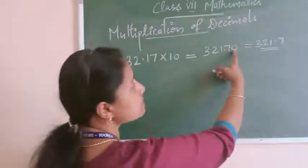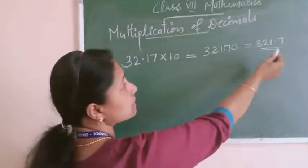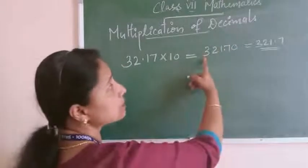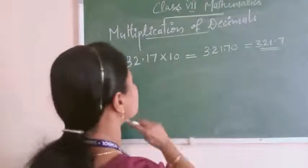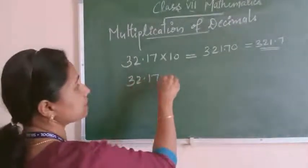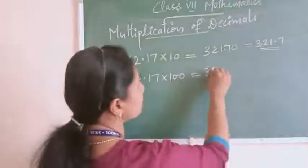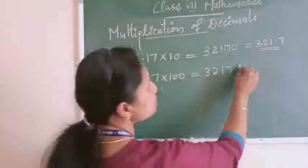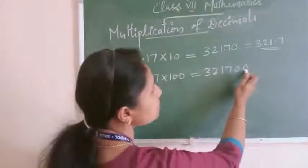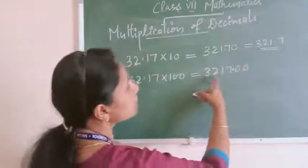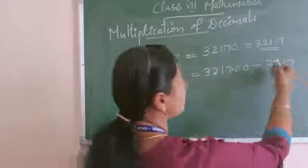Now see multiplication by 100: 32.17 multiplied by 100. Without considering the point, write the number 3217, then put two zeros for the 100. In the question, two digits are given after the point, so in the answer count two digits from the right. You get 3217.00, which equals 3217 — the same answer. For 32.17 multiplied by 1000, write 3217 and put three zeros. In the question, two digits after the point, so count two from the right: your answer is 32170.00, which equals 32170. In both methods you got the same answer.